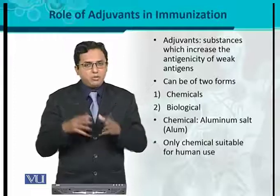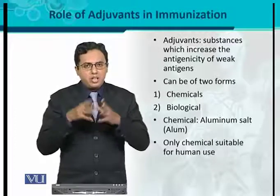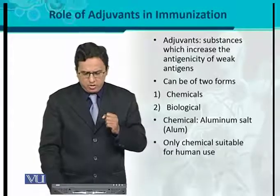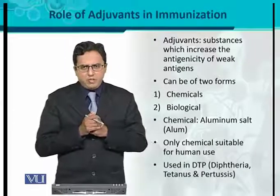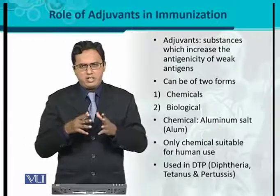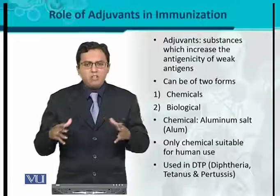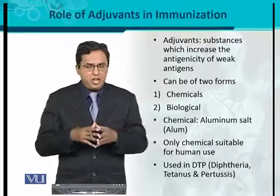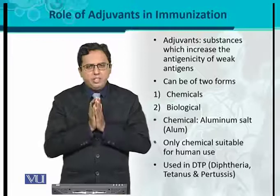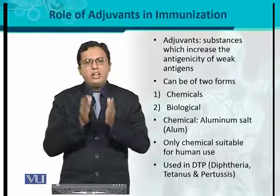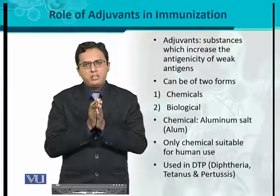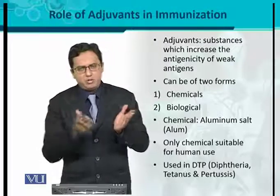That is why we use safe adjuvants. Alum is one such safe adjuvant. Alum is particularly used in the vaccine called DTP, which stands for diphtheria, tetanus, and pertussis — a combination vaccine used against all three diseases. When alum is mixed with the DTP vaccine and injected, its antigenicity or immunogenicity is increased, and the immune response becomes long-lasting, with some kind of memory response also being generated.